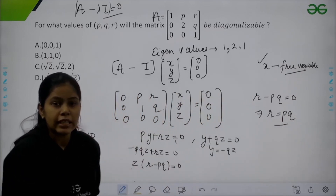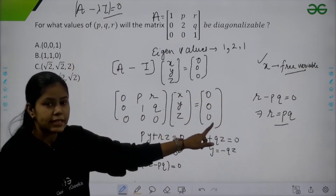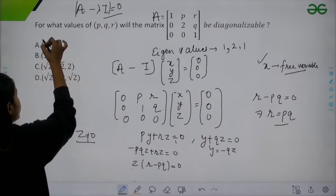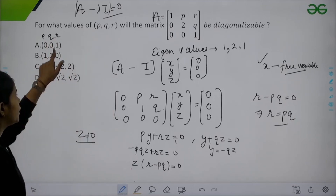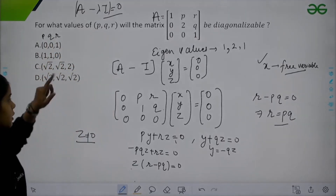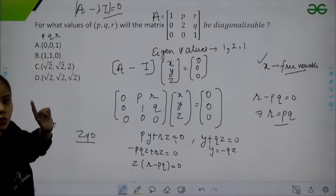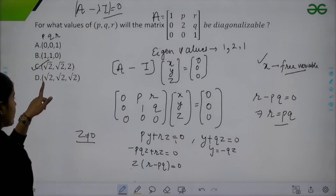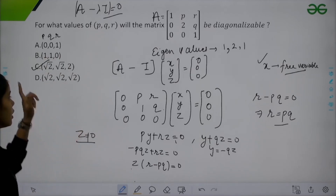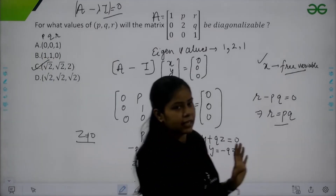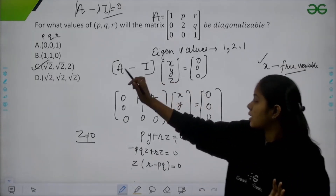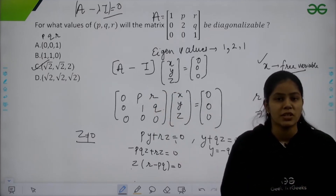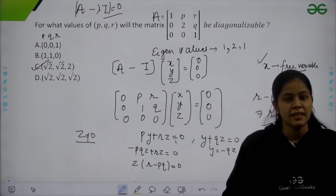Now let's check which option satisfies R = P·Q. Option A: 0×0 = 1? False. Option B: 1×1 = 0? False. Option C: √2 × √2 = 2? This is correct. Option D: √2 × √2 = √2? False. So only option C is correct — the condition R = P·Q is satisfied only by option C.